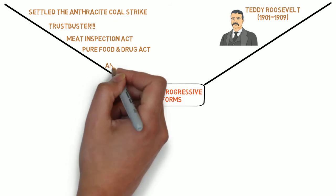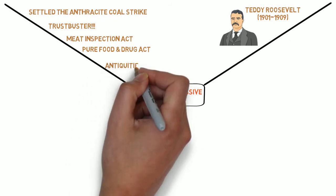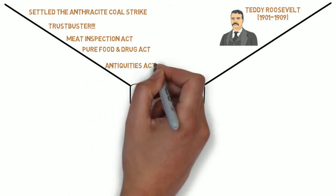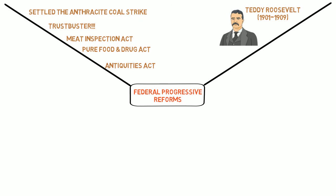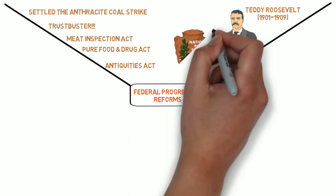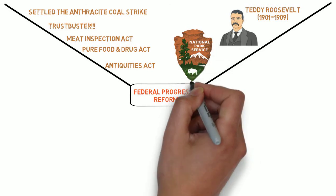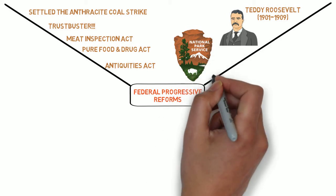Another area of progressive reform Roosevelt championed was in the area of environmental conservation. In 1906, Roosevelt signed the Antiquities Act, which gave the president the authority to set aside public land as protected national parks.